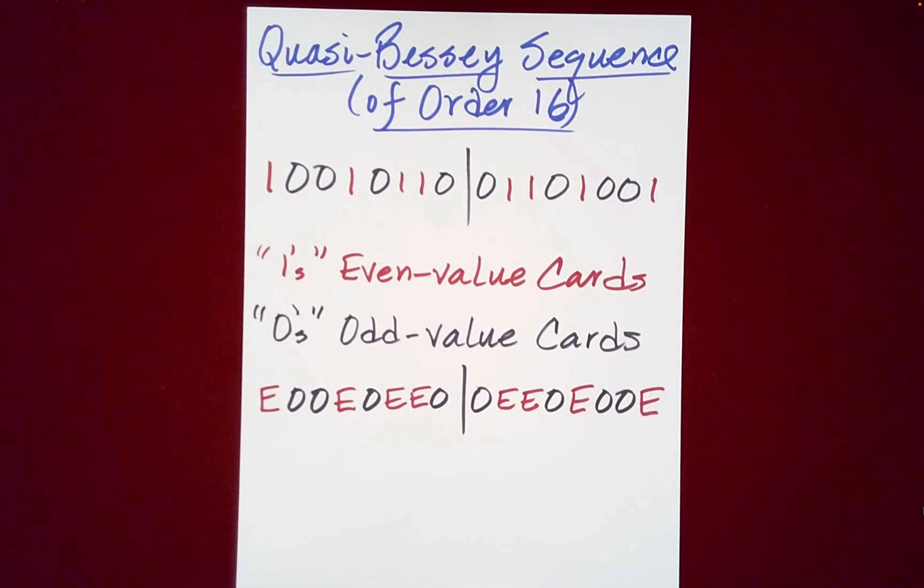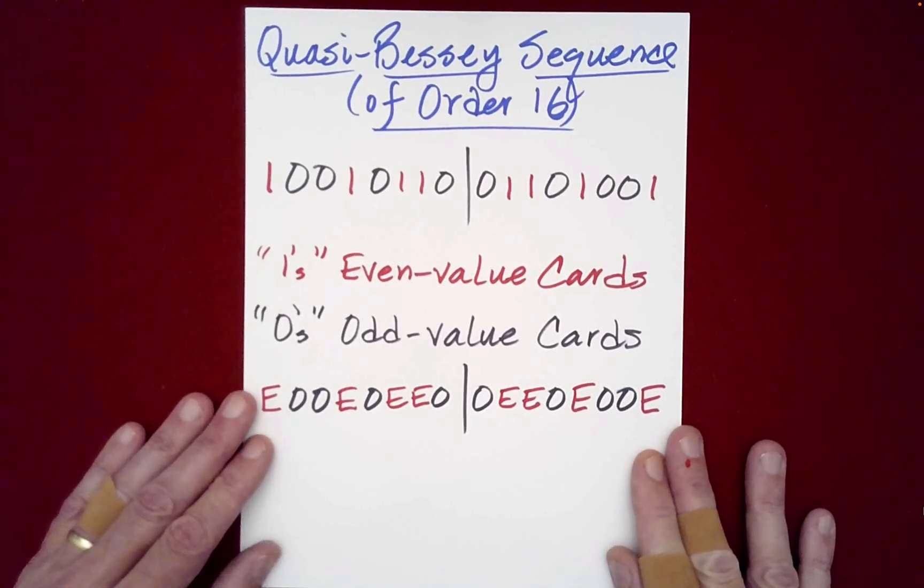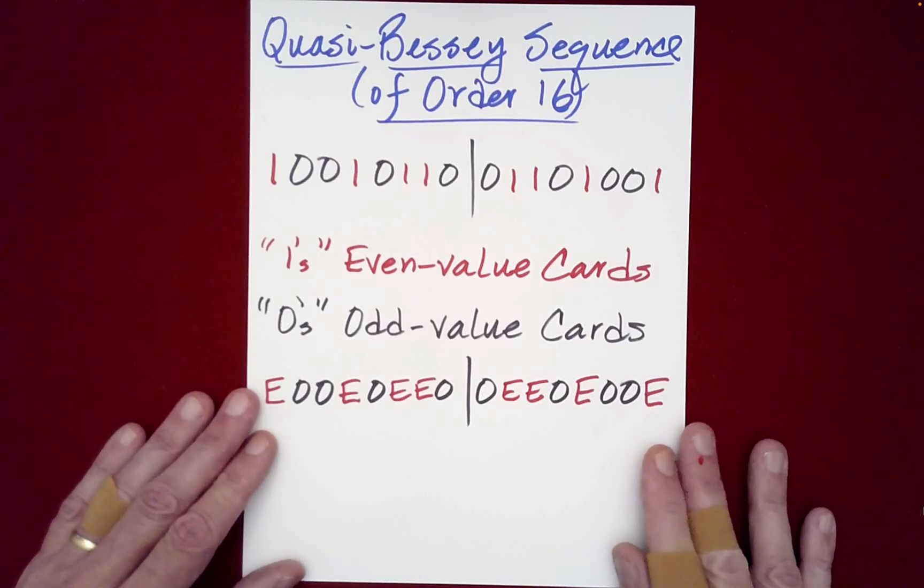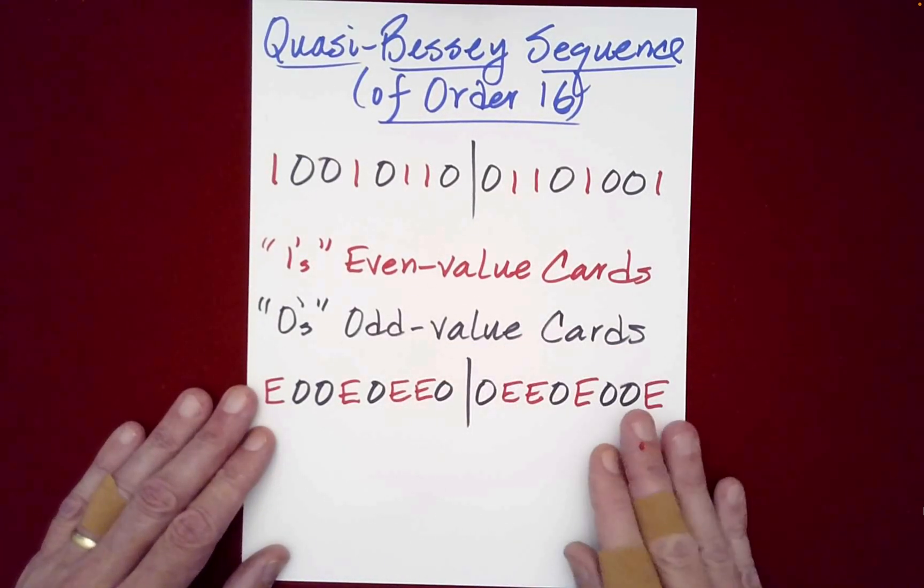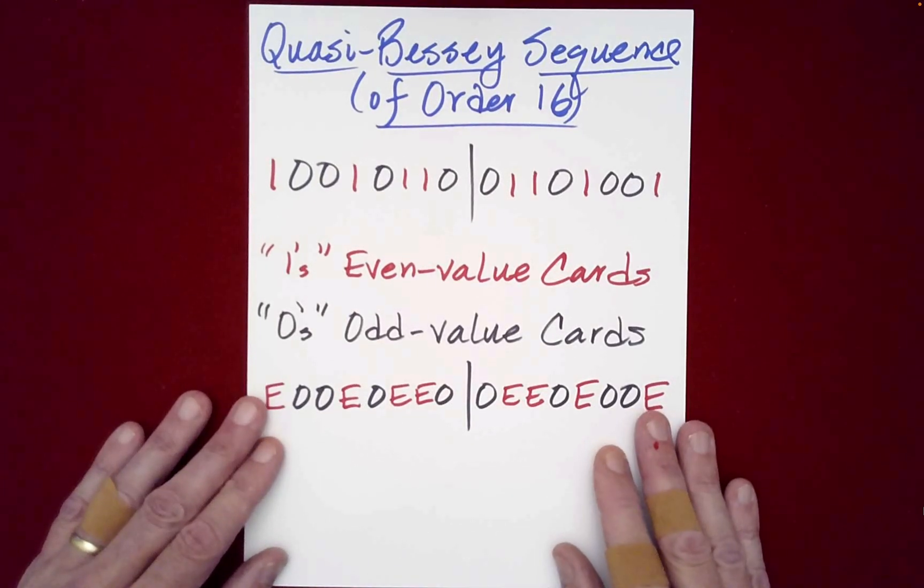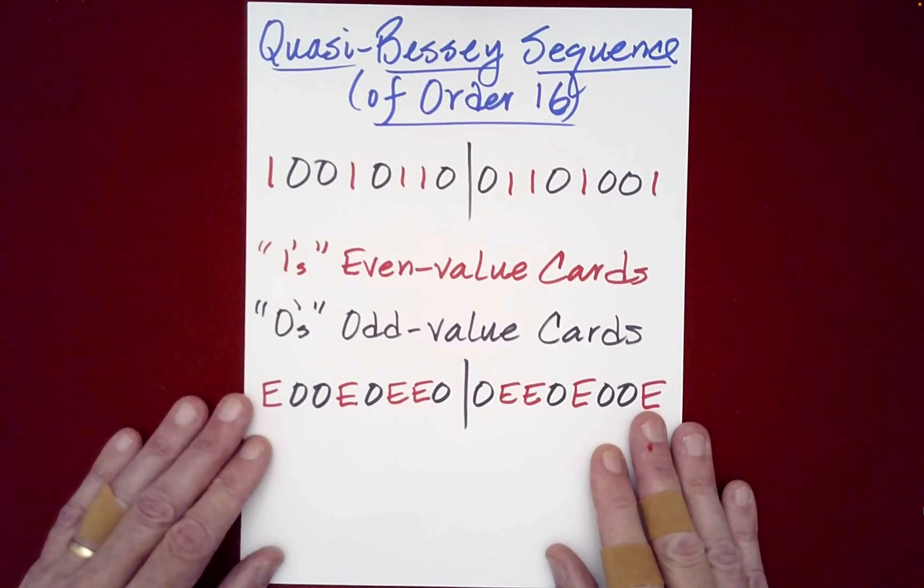And then we can draw the conclusion that we did, that there will be an equal number of even value cards and odd value cards facing each direction. Okay, absolutely amazing. So this is true mathematical card magic. So thank you for watching and look for the links in the description below. I also have videos on the Hummer principle if you want to learn about that. So thank you again, and I hope you'll join me in other videos on this channel. So thank you again.